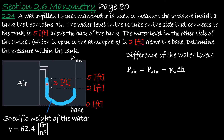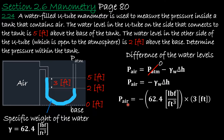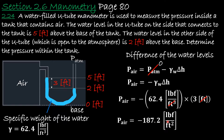From the hydrostatic formula, pressure equals ρgh, where density times gravity is the specific weight. So we use the specific weight of water times the change in height. Since this is gauge pressure, the atmospheric pressure term equals zero and cancels. The pressure of air equals minus the specific weight of water times the change in height: −62.4 lb/ft³ × 3 ft = −187.2 lbf/ft².